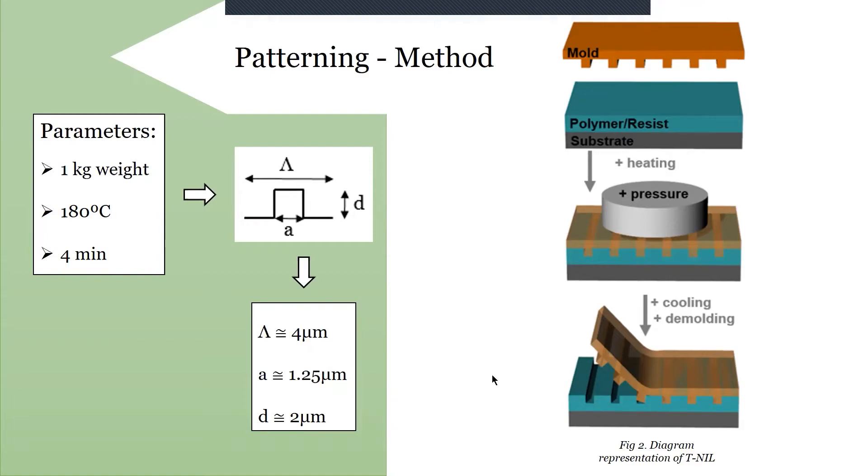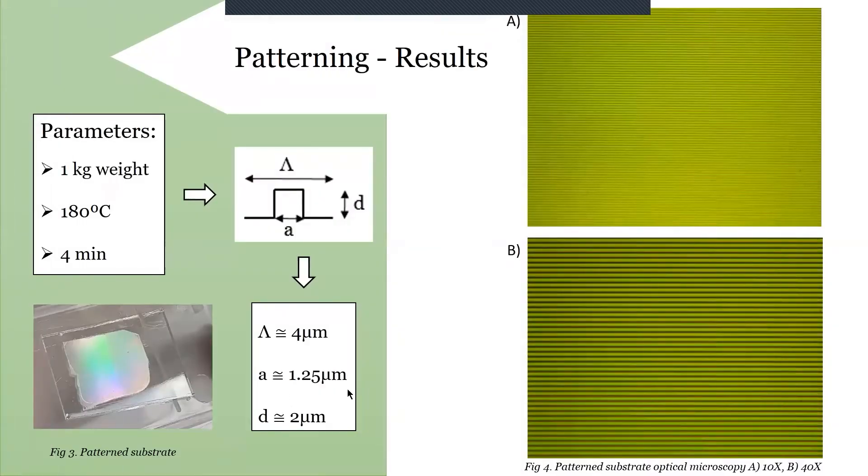As you can see in figure three, some gratings are formed on the thin film. And in figure number four, I have prepared two optical images using different objectives. At this point, we have successfully developed periodical gratings of polystyrene.